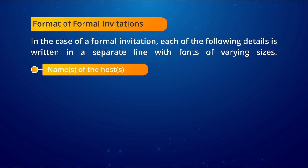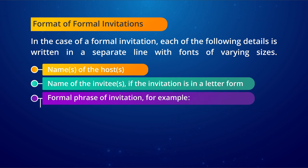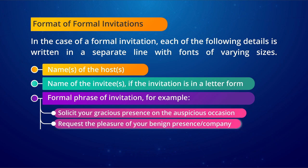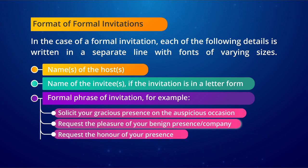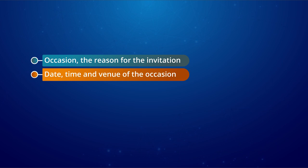The details for a formal invitation include: name of the host or hosts; name of the invitee or invitees if the invitation is in letter form; a formal phrase of invitation — for example, 'solicit your gracious presence on the auspicious occasion,' 'request the pleasure of your benign presence,' 'request the honor of your presence,' or 'you are cordially invited to.' Then the occasion — the reason for the invitation — followed by date, time, and venue.